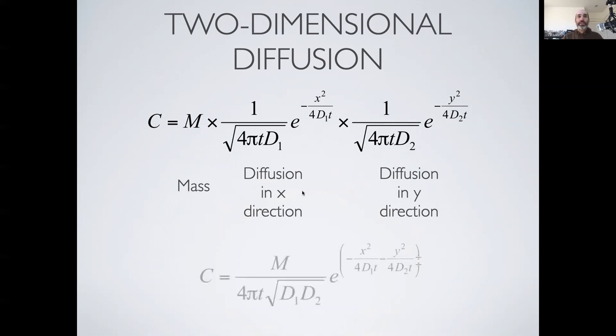We can combine terms to show that this model for concentration, now as a function of x, y, and t, also takes on the form of a Gaussian distribution, but it's now a bivariate or two-dimensional multivariate normal distribution.